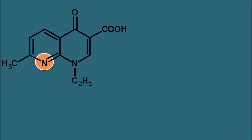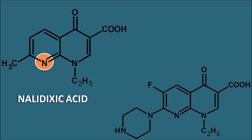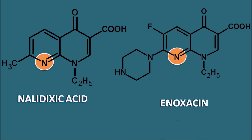The 1,8-naphtheridine ring system, where the 8th position carbon is replaced with nitrogen, is present in two drugs. One is nalidixic acid, the first generation fluoroquinolone — though not strictly a fluoroquinolone, it is developed in this category. Another example is enoxacin, a second generation fluoroquinolone with extended spectrum activity towards gram-negative bacteria. In nalidixic acid, the carbon-to-nitrogen replacement at position 8 results in increased protein binding, reducing activity and potentially precipitating drug interactions.